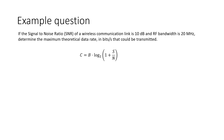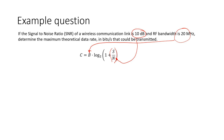Let's take a look at a couple of examples. Here's the first: if the signal-to-noise ratio of a wireless communication link is 10 dB and the RF bandwidth is 20 megahertz, determine the maximum theoretical data rate in bits per second that could be transmitted. The two parameters given are: bandwidth = 20 megahertz, and the signal-to-noise ratio = 10 dB. We're given the ratio directly rather than signal power and noise power separately, which is absolutely fine.